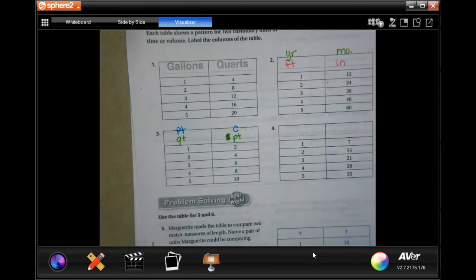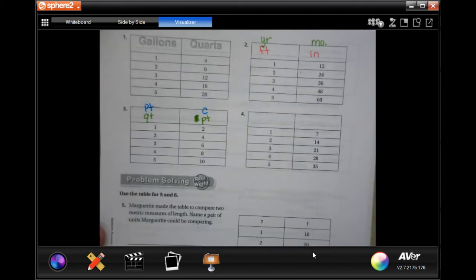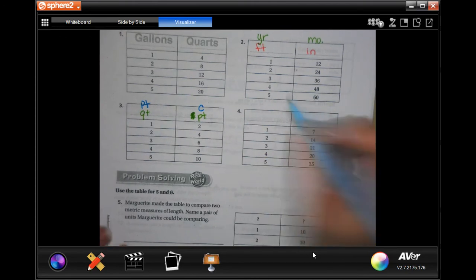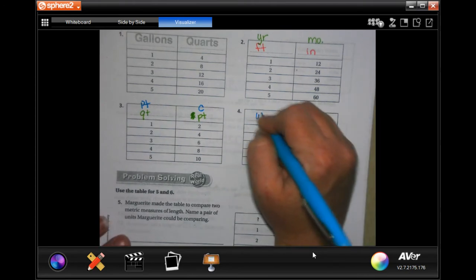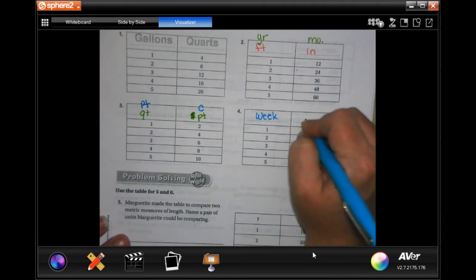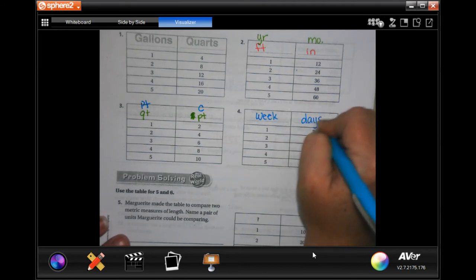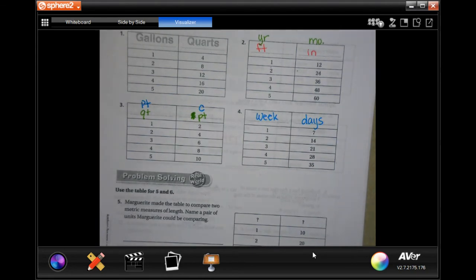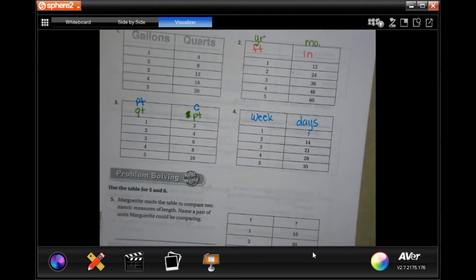Now something with this ratio of 1 to 7. Well, the only one that I know of is one week is seven days. Same thing here, you're gonna come up with that. You guys do five and six.